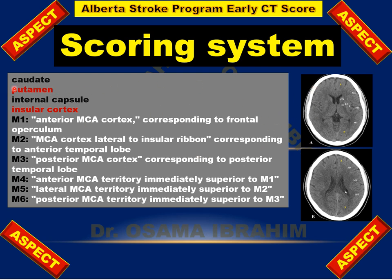The 10 areas are the caudate, putamen, internal capsule, and the insula. Then the other 6 are M1 — the anterior middle cerebral artery cortex corresponding to the frontal operculum; M2 — the middle cerebral artery cortex lateral to the insular ribbon, representing the anterior temporal lobe; and M3 — the posterior middle cerebral artery cortex, representing the posterior temporal lobe.